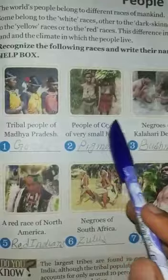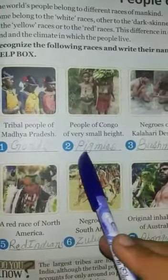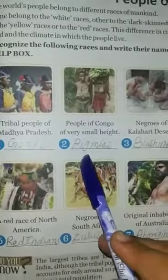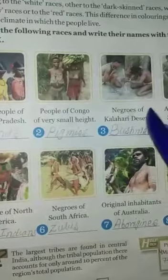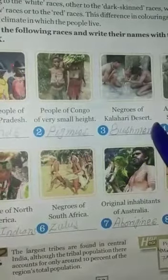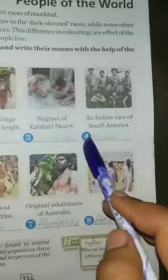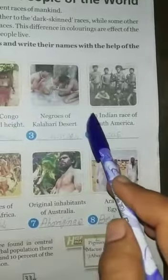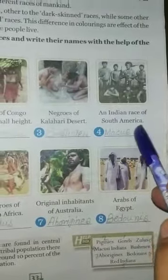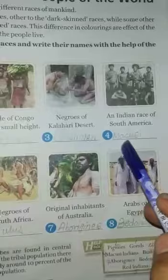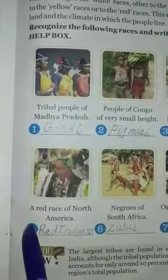Number 2, people of Congo, very small height, called Pygmy. Number 3, negros of Kalahari Desert, called Bushmen. Number 4, an Indian race of South America, called Macusey.